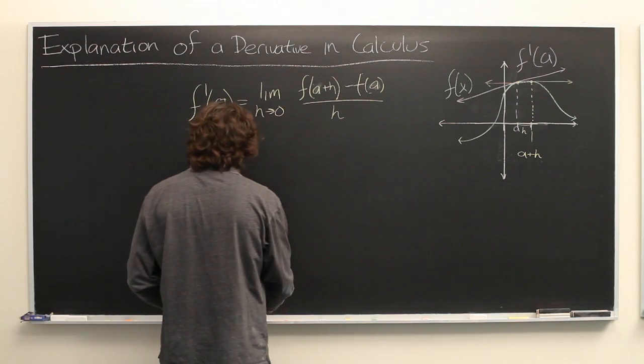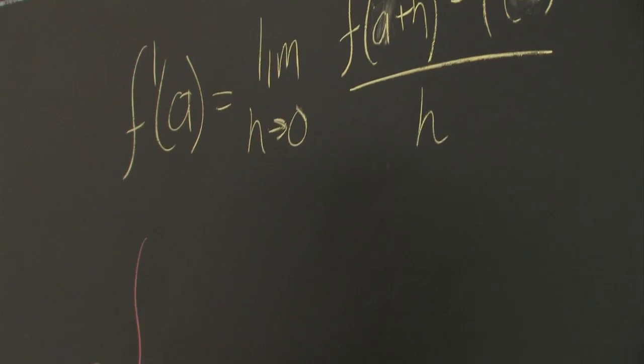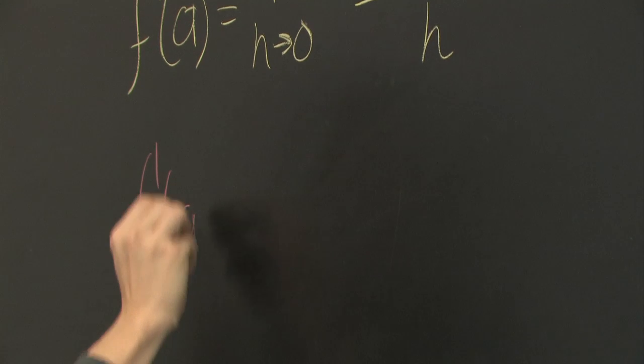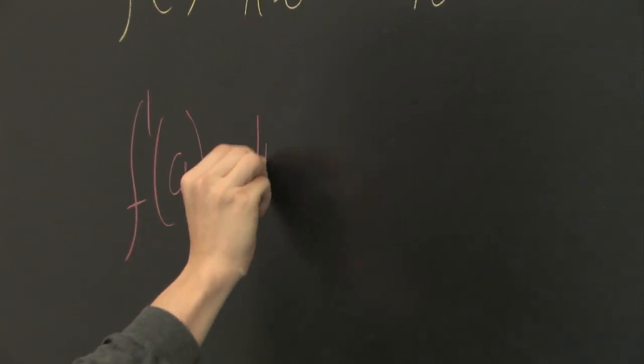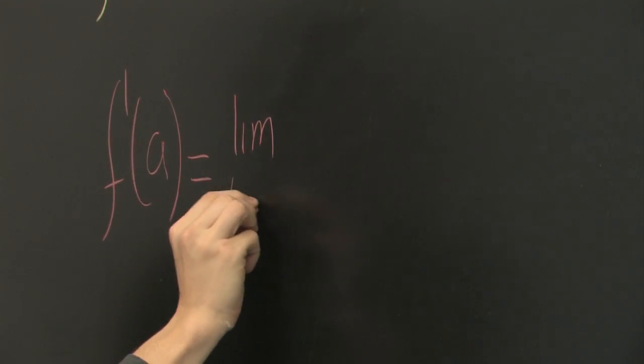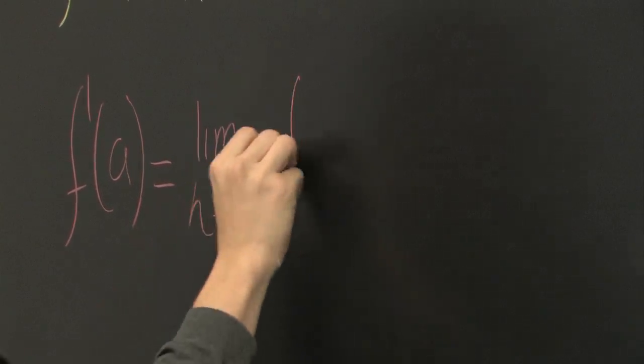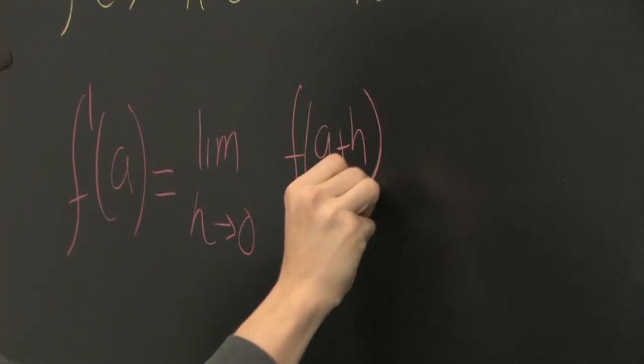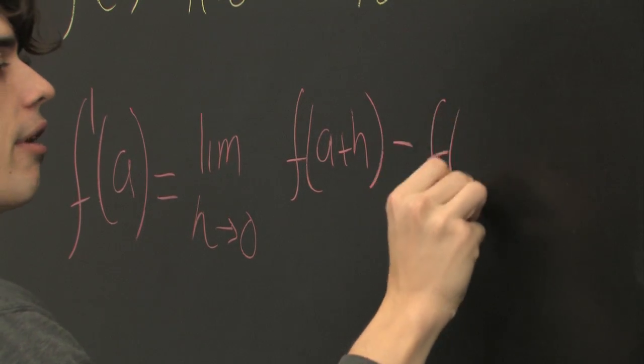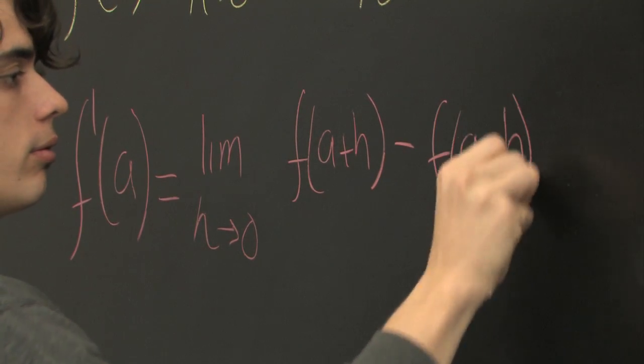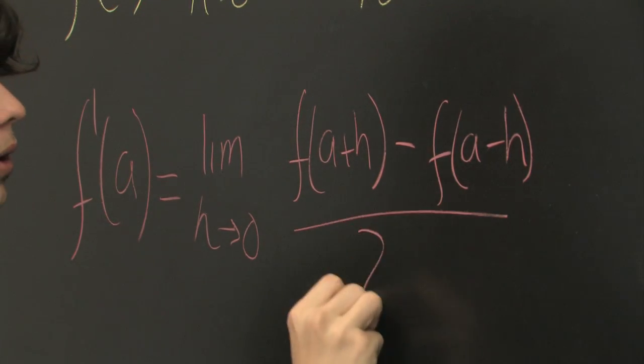Now, the other way to visualize this, we've got f prime of a, again, a limit as h goes to zero. Here, we'll write f of a plus h minus f of a minus h all over 2h.